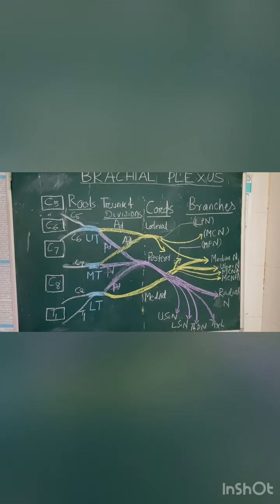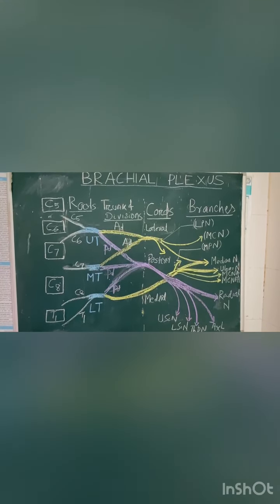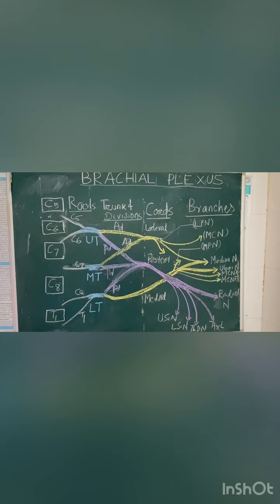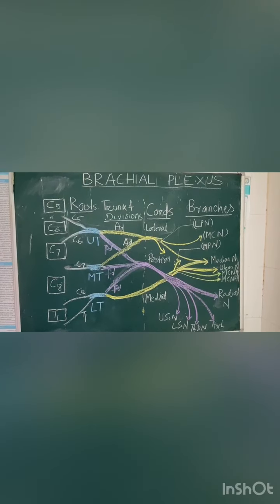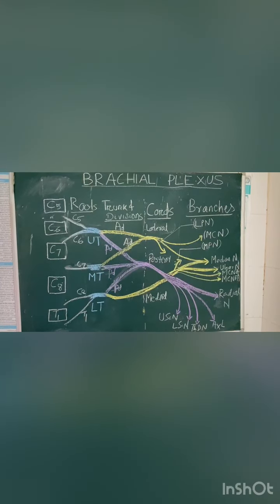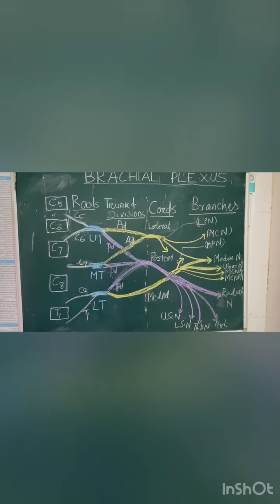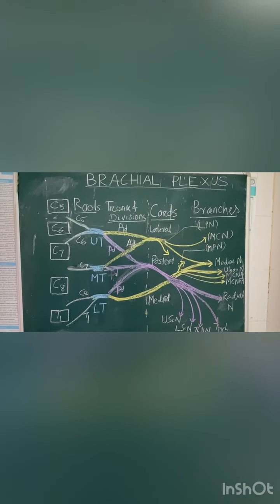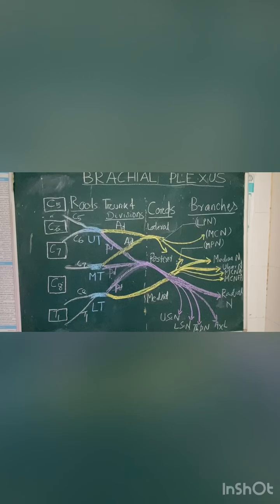The posterior cord gives rise to five branches. The cord itself continues as the radial nerve. The other branches are the upper subscapular nerve, the lower subscapular nerve, the thoracodorsal nerve, and the axillary nerve.